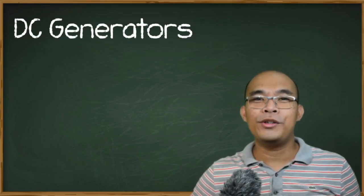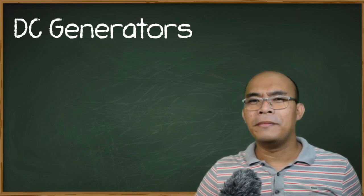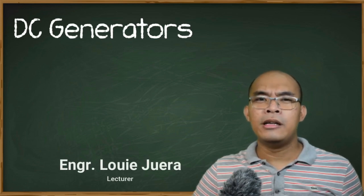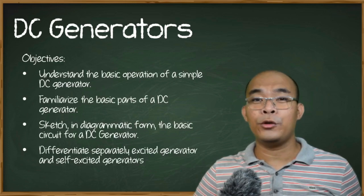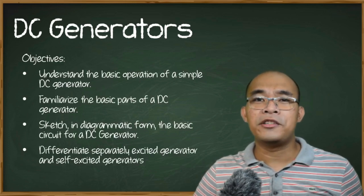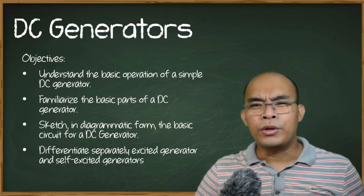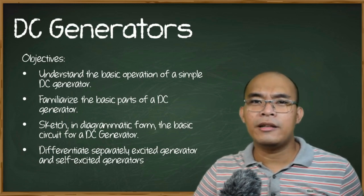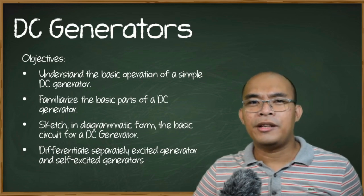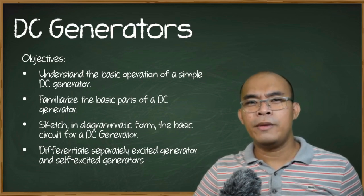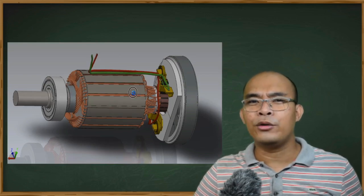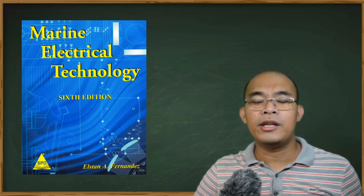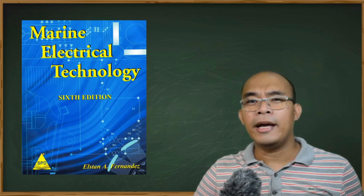Good day everyone, welcome to this course entitled Electrotechnology 3 or Marine Electricity and Electrical Maintenance. I'm Louie Iwera, your lecturer for this semester. Our topic for this week is about direct current or DC generators. By the end of this lecture you are expected to understand the basic operation, the parts, and be able to sketch the circuit diagram of a simple DC generator. For this entire series of lectures we will be using the Marine Electrical Technology book by Elston Fernandez as a main reference.